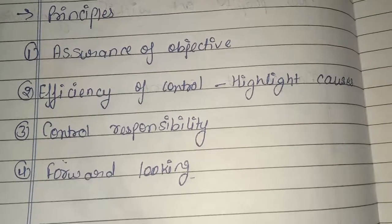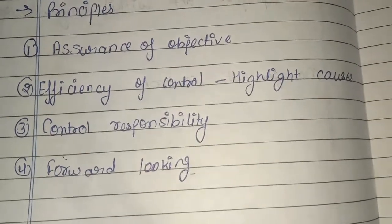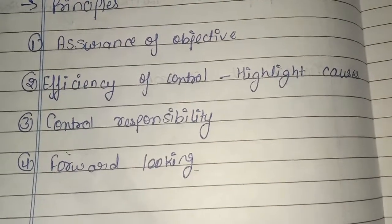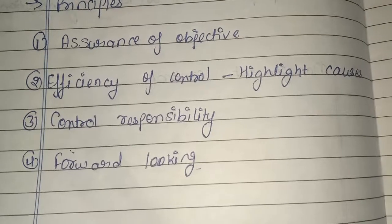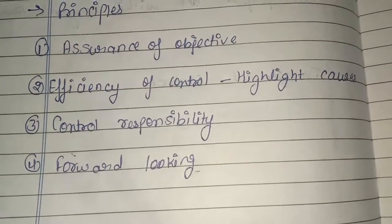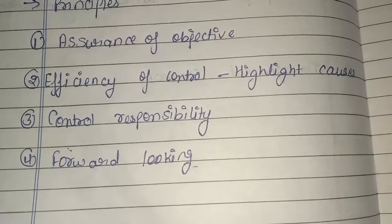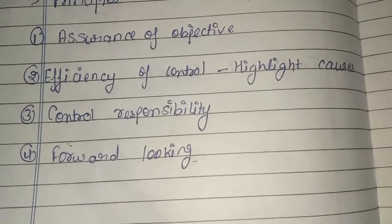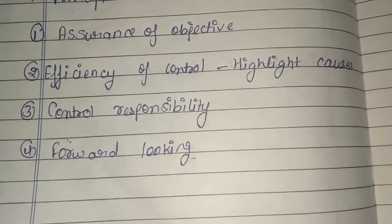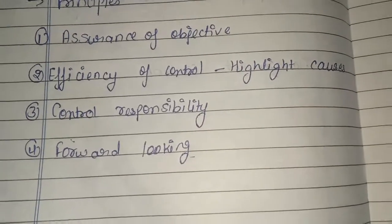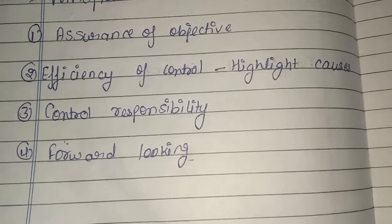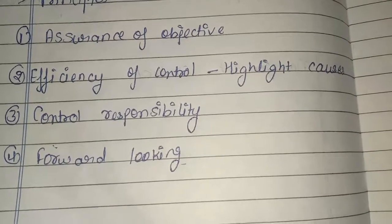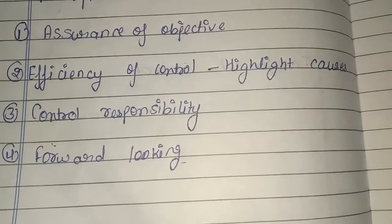तीसरा principle है control responsibility। जब हम management और organization की बात करते हैं तो हर किसी की particular responsibility अलग-अलग होती है। तो उस responsibility को हमें control करना चाहिए — यह नहीं कि एक ही बंदे को बहुत ज्यादा responsibility दे दी। हर कोई एक controlled manner में अपनी responsibility का proper utilization कर पाए।